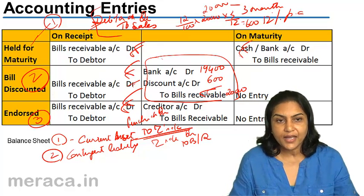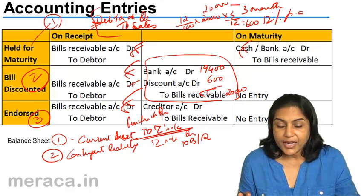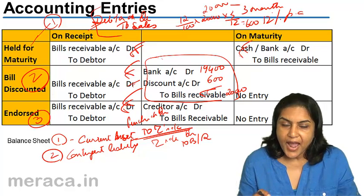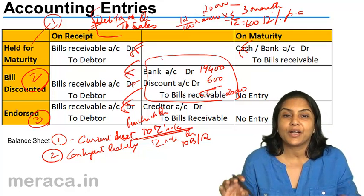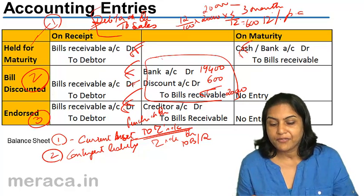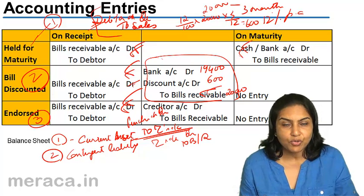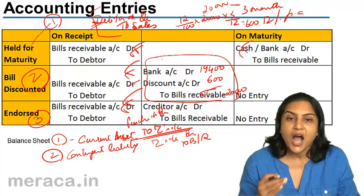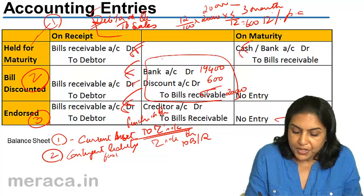What is a contingent liability? It is a liability which may arise in the future on the happening or non-happening of some event. When a bill has been discounted with the bank, it is possible that the bill is dishonored. If the bill is dishonored, this money will be deducted from our bank account — the bank will debit our account. So in the event of a dishonor of a bill, we would have an additional liability and bank balance would come down. Therefore, when a bill has been discounted with the bank, it is shown as a contingent liability outside the balance sheet as a footnote. It is a contingent liability which appears as a footnote.